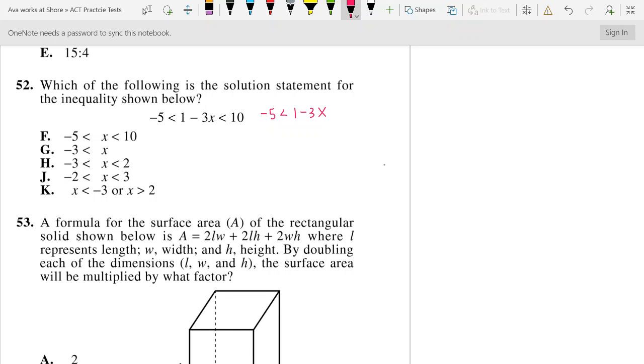and it's going to be 1 minus 3x is less than 10. Again, I took that as one, and I take this as the second inequality. And then I just solve from there.